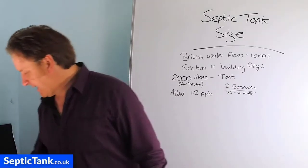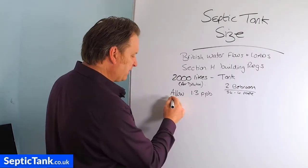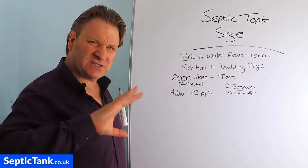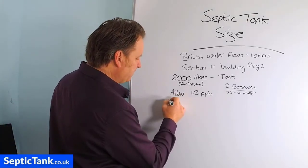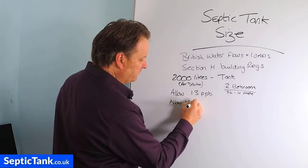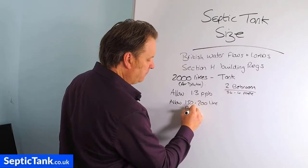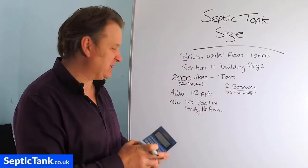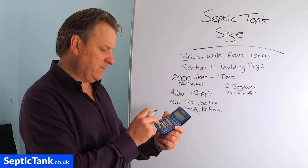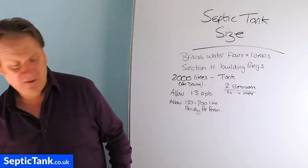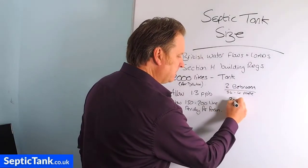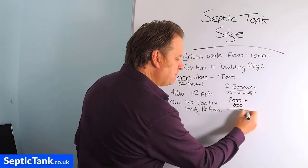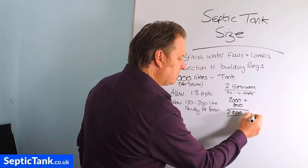British Water states that for a standard domestic property — not hotels or B&Bs, just a standard house where you and I live 24/7 — you allow anywhere from 150 to 200 litres per day per person. I'm going to err on the side of caution and go for 200 litres. So four people times 200 equals 800 litres. We take our base figure of 2000, add 800, and we would need a minimum of a 2800 litre septic tank.